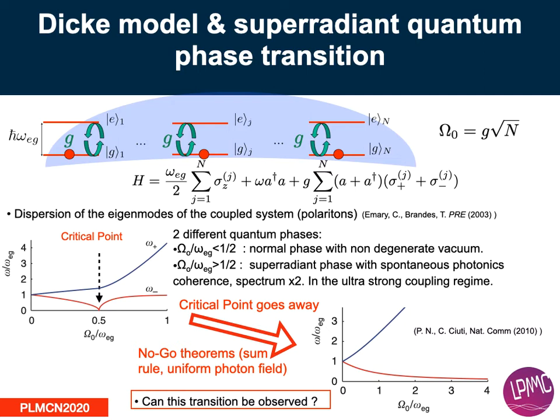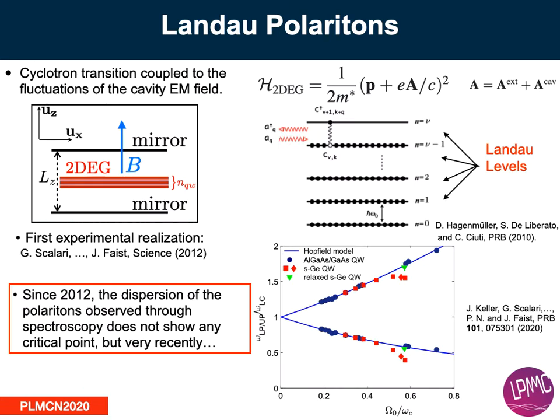You have a quantum phase transition which disappears when you add the A-squared term, which must be taken into account in a realistic system. This is a consequence of the no-go theorem for the case of a uniform photon field.